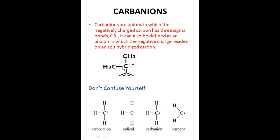So what are carbanions? A carbanion is an anion in which a negatively charged carbon has three sigma bonds. This carbon is a carbanion because it has a negative charge comprising of two electrons, or a pair of electrons, and it is bonded to three different groups with three different sigma bonds. So carbanions have three different sigma bonds and carry a negative charge comprising of two electrons.